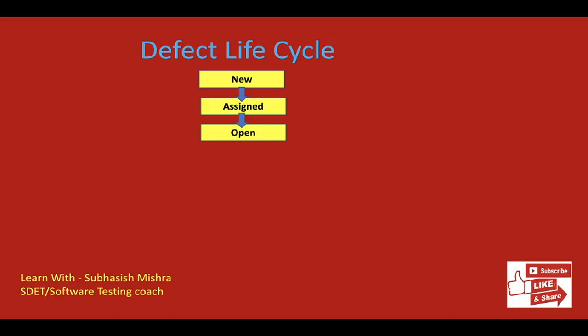Next is Fixed. When the developer analyzed the issue and did the fix — wrote some code and fixed it — he will mark the status as Fixed and pass it to the testing team, because the testing team needs to re-verify if it is working or not. After marking it Fixed, the developer puts the next status as Pending Retest, meaning the testing is pending on the tester's end.